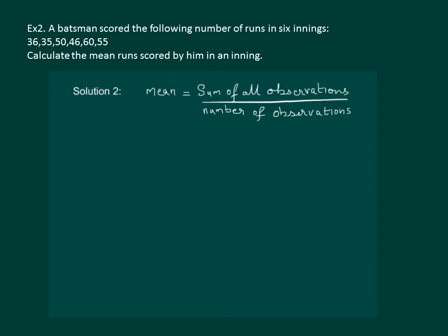We know that mean is equal to sum of all the observations by number of observations. So, the numerator will be sum of all the observations. And the denominator will be number of observations that is 1, 2, 3, 4, 5, 6. So, the denominator will be 6.